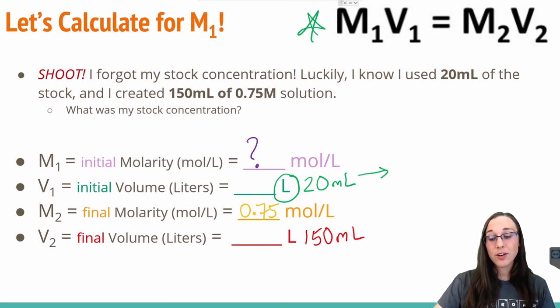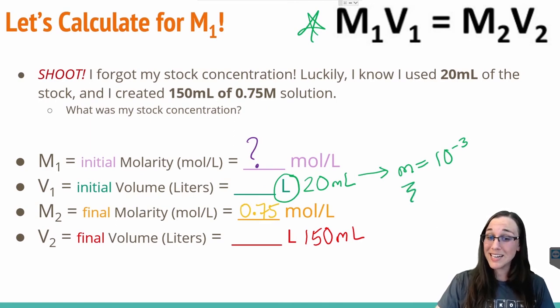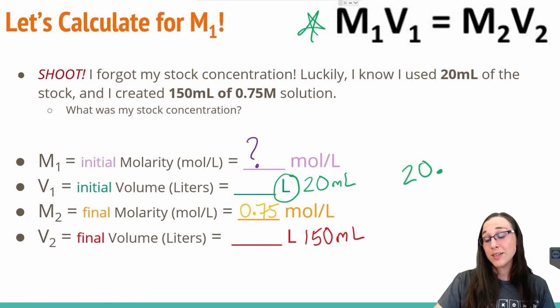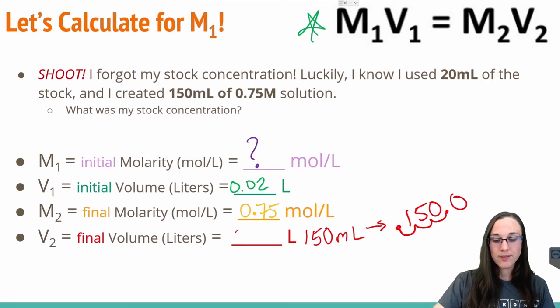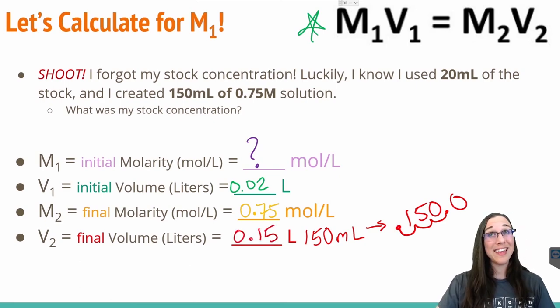Before I can plug and chug into my M1V1 equals M2V2 dilution formula, I first need to convert these milliliters to liters. Now, milli is essentially 10 raised to the negative third power, which means anytime you see milli, you're going to move a decimal place to the left three times. So for 20, we technically have an invisible decimal point right there, and we just need to move it back three spaces, and that will give us our liter value. For the 150 milliliters, again, there's an invisible decimal point right there that we just moved back three spaces. So we have 0.15 liters in total at the end.